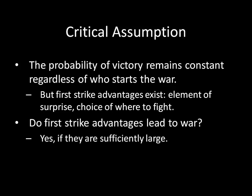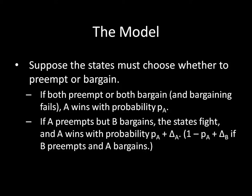To see this, we go back to the algebraic model. The model works as follows: states must choose whether to preempt or bargain before they sit down at the bargaining table. If you're a state, you decide: do I want to talk things out with my opponent, or do I want to start a fight right now? If I'm starting a fight right now, then I'm preempting. If I'm sitting down at the bargaining table, then I'm bargaining. If both preempt, or both bargain and bargaining fails, then A wins with probability PA.